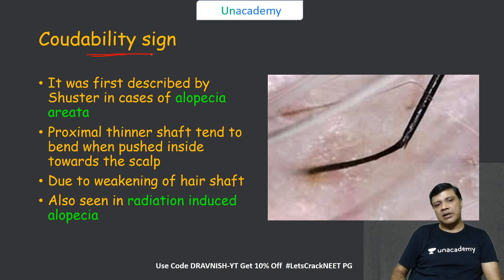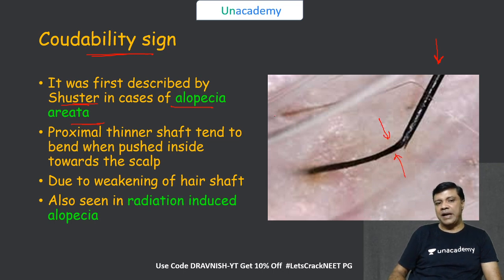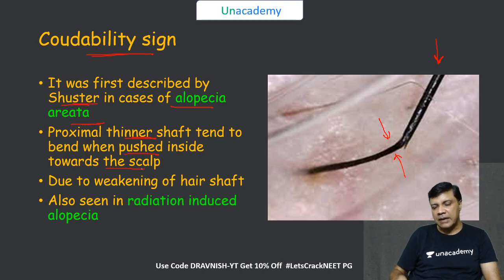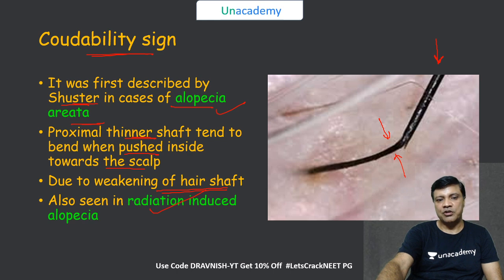The coudability sign, discovered by Schuster, is seen in patients with alopecia areata. If vertical pressure is applied over the hair shaft in the peripheral lesion of alopecia areata, the proximal thinner hair shaft tends to bend when pushed toward the scalp. This positive coudability sign is due to weakening of the hair shaft and can also be seen in radiation-induced alopecia.